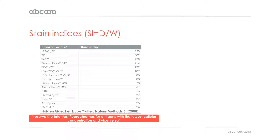A quick question: the stain index value is very much dependent on the instrument, but would you expect the order of the fluorochromes to be the same irrespective? Yes, the order should be very similar to what you see. This gets us to the statement that you reserve the brightest fluorochrome — in brightness in inverted commas — for the antigens that have the lowest cellular concentration, and also reserve the less bright fluorochromes for the antigens that contain the highest cellular concentration. This is just a common sense approach.